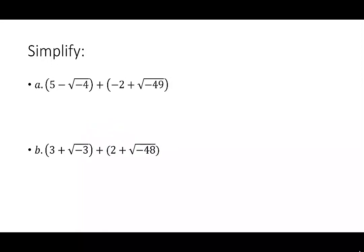Sometimes when we're adding and subtracting complex numbers, they're not given to us in standard form, so our first step will be to rewrite the expressions. When I look at 5 minus the square root of negative 4 plus negative 2 plus the square root of negative 49, the first thing I want to do is write 5 minus the square root of negative 4 as 5 minus 2i. Then negative 2 plus the square root of negative 49 becomes negative 2 plus 7i.